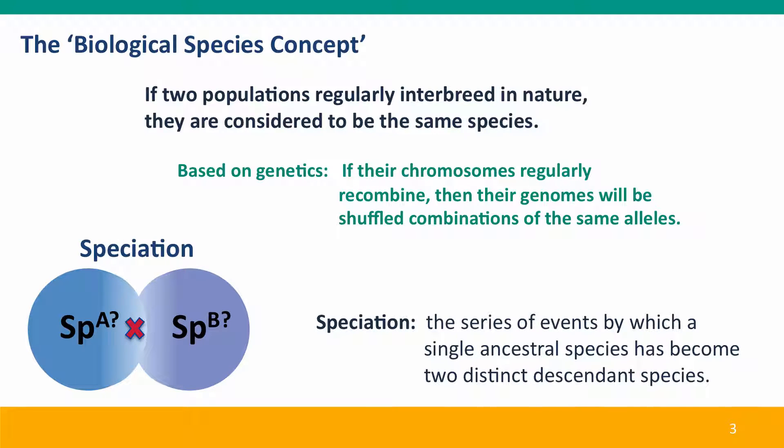Speciation then is the process, the series of events by which a single ancestral species has become two distinct descendant species. And I phrase it that way because we can't really recognize speciation when it's happening. It's not an inevitable process with a beginning and an end. It's only after the fact that you can look back and say, oh, in this case, this species did give rise to two distinct descendant species.